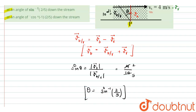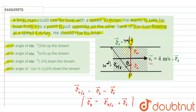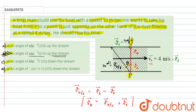At this angle, the boatman must row his boat in order to reach point Q from P. From the figure, we can see that the boatman must row his boat against the flow of the river. Whenever it is against the flow of the river, it is upstream. So the correct answer is option B: sin⁻¹(2/5) upstream. The boatman must row his boat at an angle of sin⁻¹(2/5) against the motion of the river.